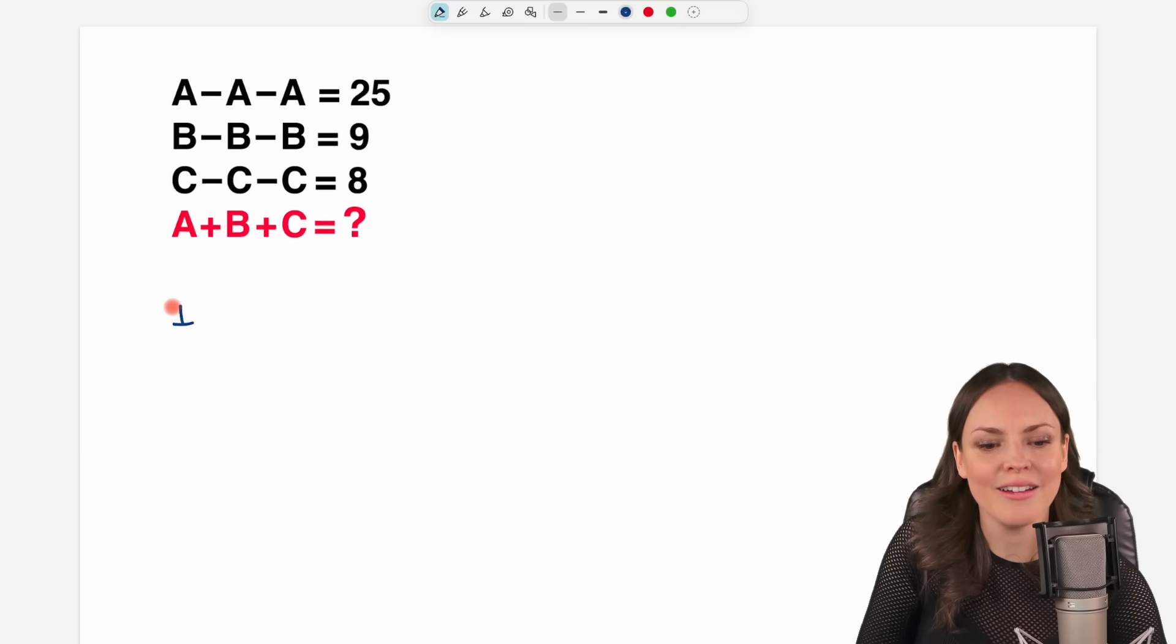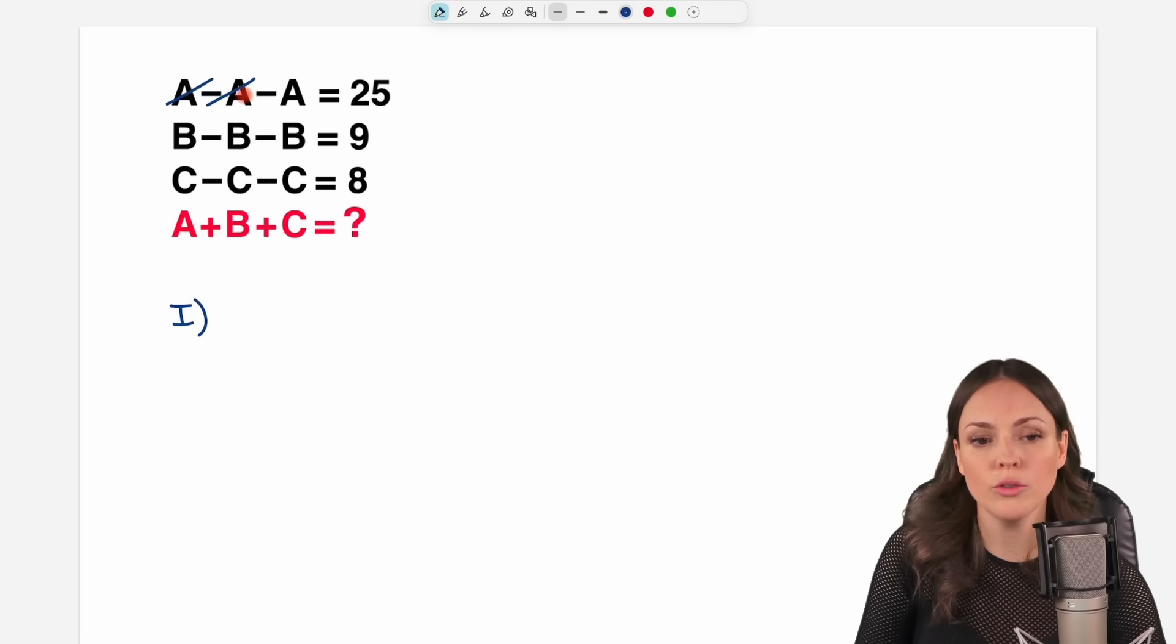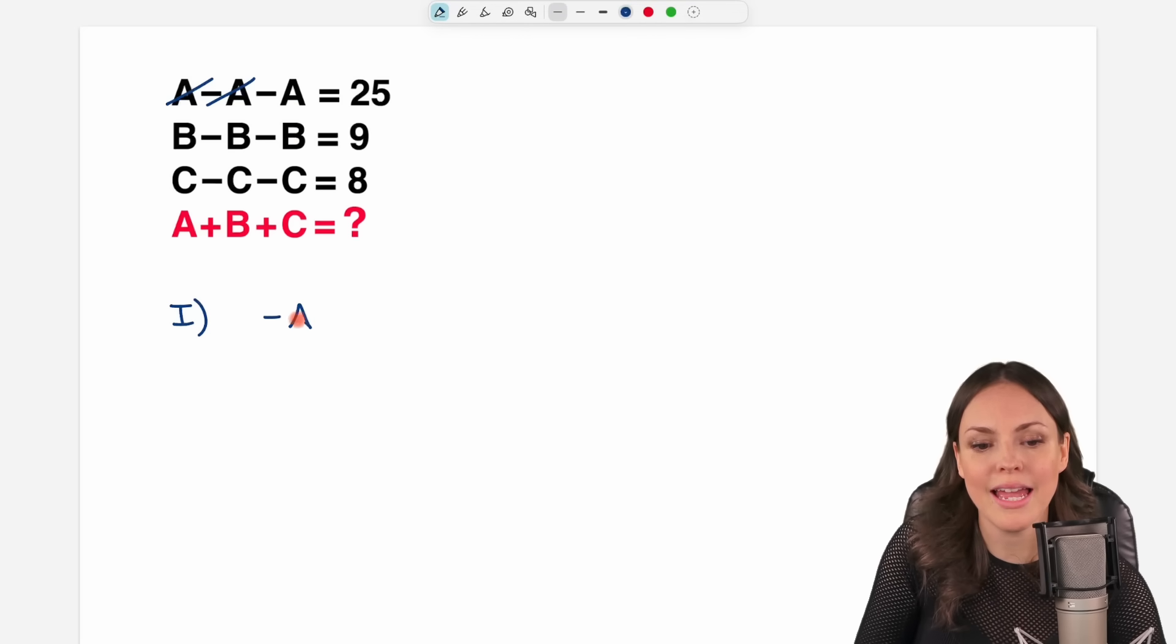So what do we have in our first equation? A minus A just cancels out and the only thing that is left is minus A, which is 25.